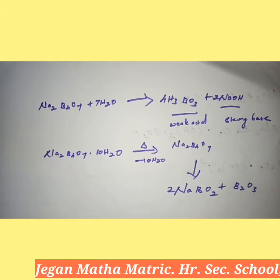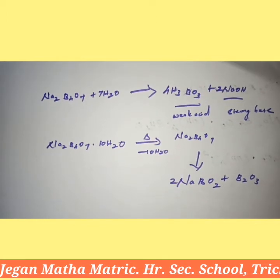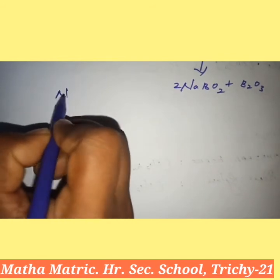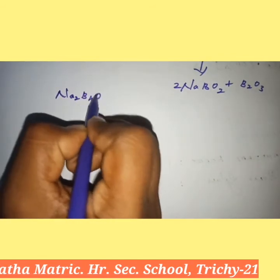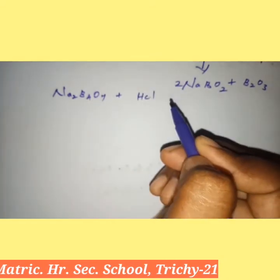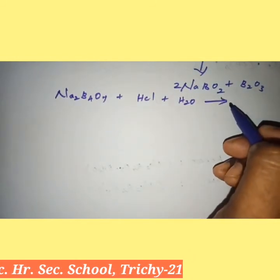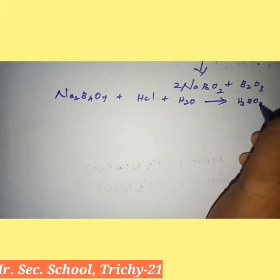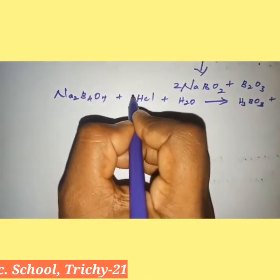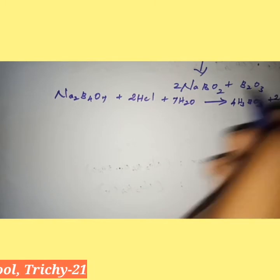Borax reacts with acids to form sparingly soluble boric acid. We take two acids: hydrochloric acid and sulfuric acid. First, borax Na₂B₄O₇ reacted with hydrochloric acid HCl plus water H₂O gives boric acid H₃BO₃ plus sodium chloride NaCl. The balanced equation is: Na₂B₄O₇ + 2HCl + 7H₂O → 4H₃BO₃ + 2NaCl.